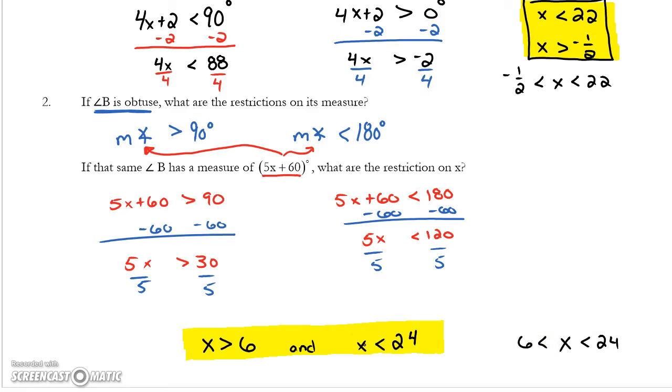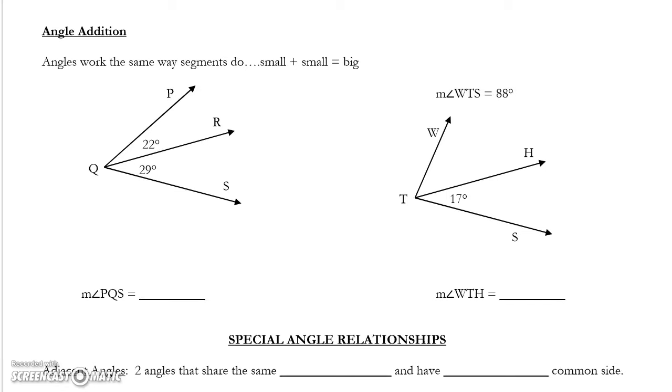Moving on to the second page, I'm going to briefly introduce angle addition. This concept is the same exact thing as segment addition that we did before the first quiz. In segment addition, we would say that segment AB plus segment BC is equal to segment AC.